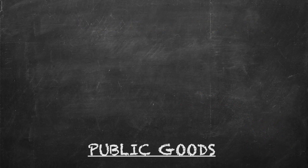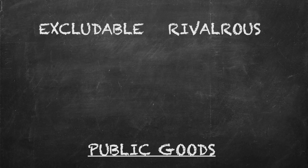In economics, the free rider problem occurs when an individual or group receives the benefit of a good but avoids paying for it. The free rider problem is most commonly seen with public goods. Public goods are neither excludable nor rivalrous — that is to say that people cannot be prevented from using these goods, and one person's use does not diminish another person's ability to use them.